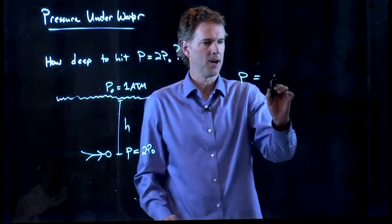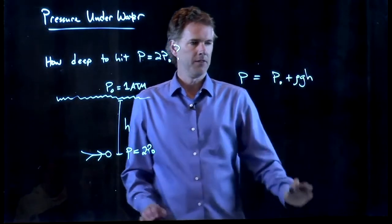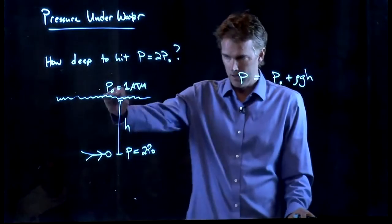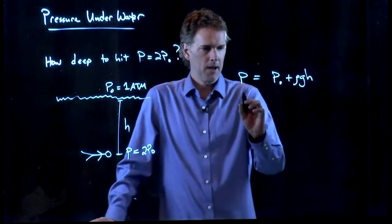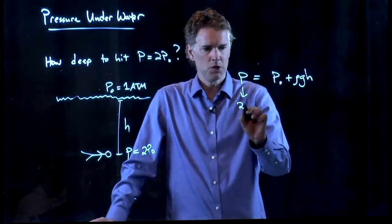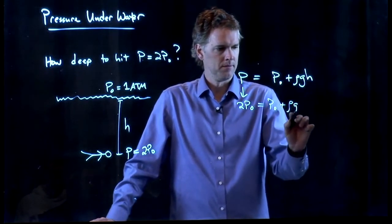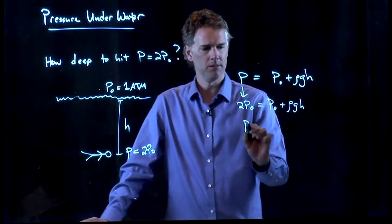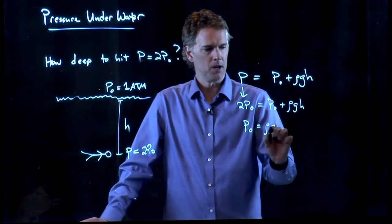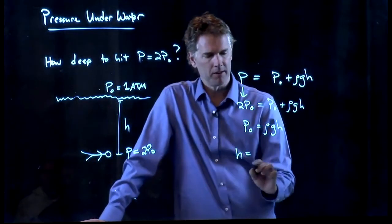We go back to our equation that we just derived. Pressure underwater is this p-naught at the surface plus rho g h. And now this one is going to be 2 p-naught. And so I can subtract 1 p-naught from both sides and this becomes p-naught equals rho g h and now I can solve this thing for h.